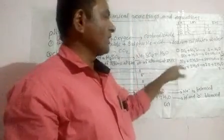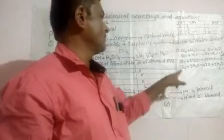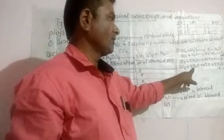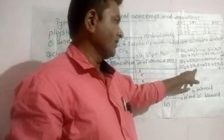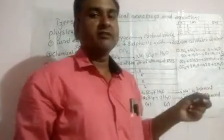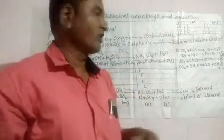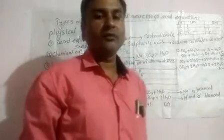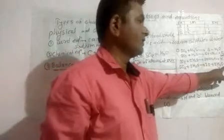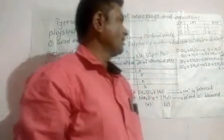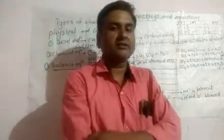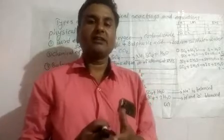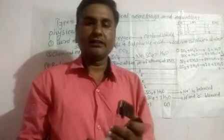Finally, write the physical states: Sulfur Dioxide (SO2) is in gaseous form (g); Hydrogen Sulfide (H2S) is also gaseous (g); Sulfur (S) is in solid/powder form (s); Water (H2O) is in liquid form (l). This question is very important for three marks in the board exam. Tomorrow we will see the different types of chemical reactions. Thank you.